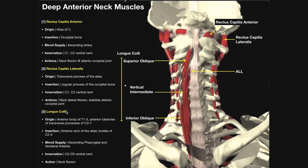The third muscle is longus colli, a series of muscle fibers running from the atlas all the way down into some of the thoracic vertebrae. Longus colli is divided into three regions: the superior oblique, the vertical intermediate, and the inferior oblique. Depending on which region, the origins and insertions change. The superior oblique fibers run obliquely and are the highest up.